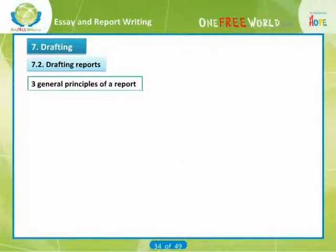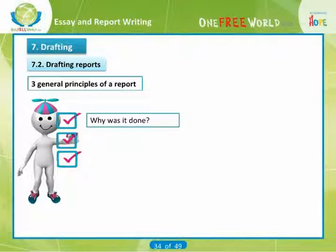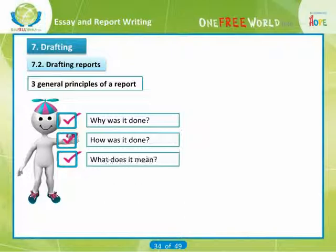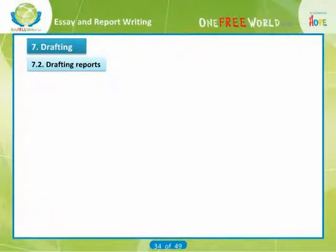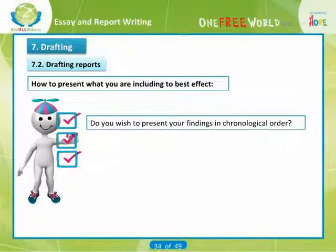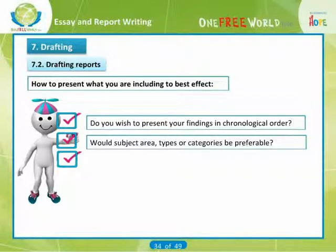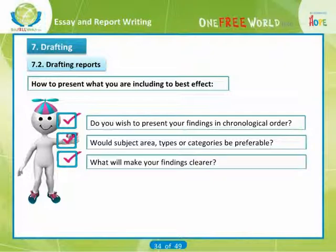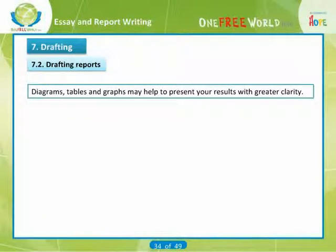The three general principles of a report — whether it is a social sciences investigation or a scientific experiment — are: Why was it done? How was it done? What does it mean? You will need to make decisions not only about what to leave out because it isn't particularly relevant, but also about how to present what you are including to best effect. Do you wish to present your findings in chronological order? Would subject area types or categories be preferable? Diagrams, tables, and graphs may help to present your results with greater clarity. Headings, subheadings, numbered paragraphs, and bullet points can also help to emphasize the main issues.